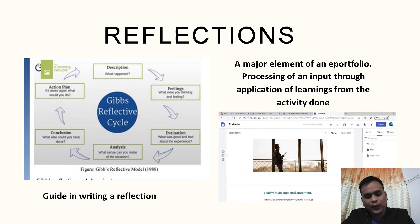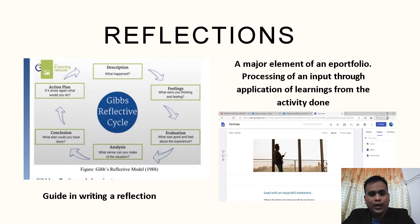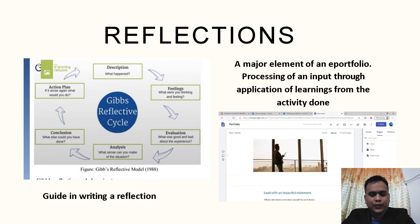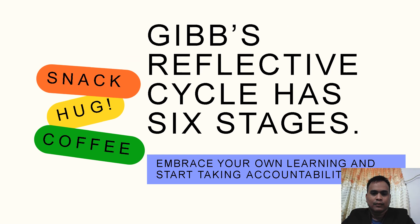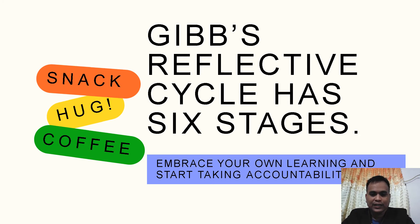There is a guide in writing a reflection called the Gibbs Reflective Cycle. This Gibbs Reflective Cycle has six stages where the creator of the e-portfolio can be guided on what to write in a reflection. Reflection is very important for the development of the e-portfolio. This cycle will make you embrace your own learning and start taking accountability of it.